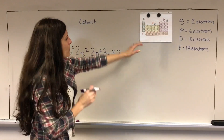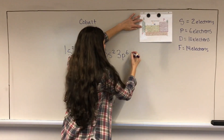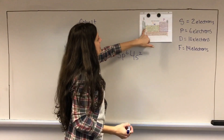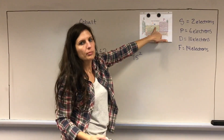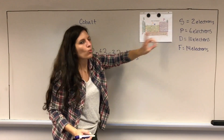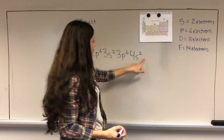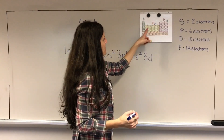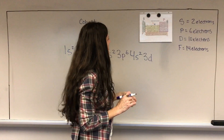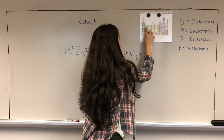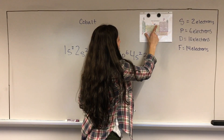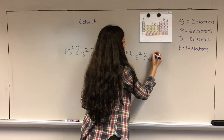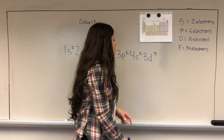Finally I'm in the row that contains cobalt, which is the fourth row. So the 4s is next and it's full. Now I'm hitting a d subshell for the first time. The d subshell runs one number behind the s and p, so instead of 4d, it's actually going to be 3d. Then I count how many spaces over cobalt is - one, two, three, four, five, six, seven - it's the seventh element in the d sub level, so it's going to be 3d⁷.